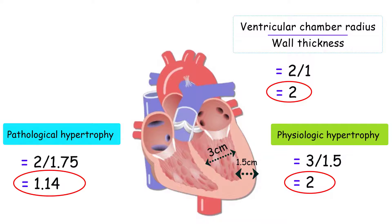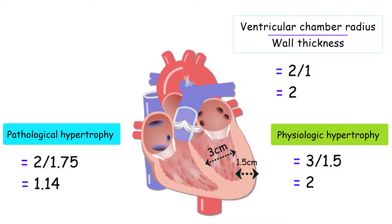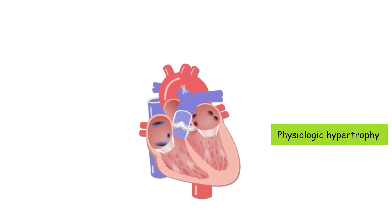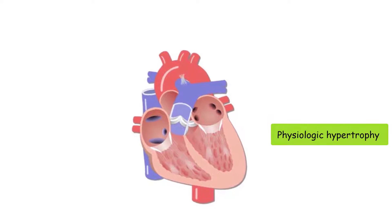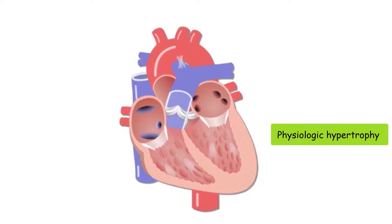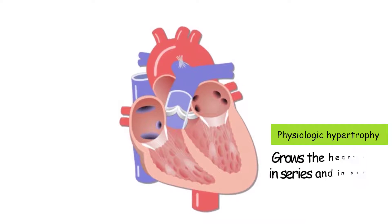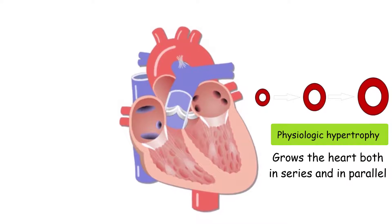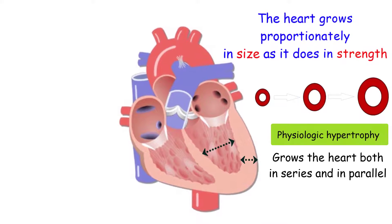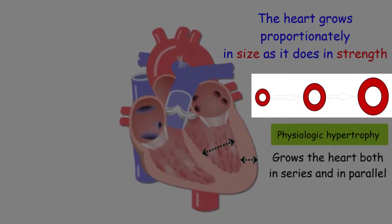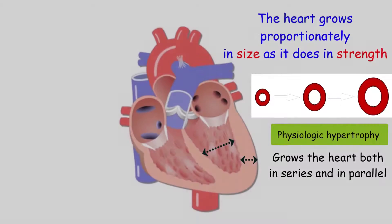One crucial way physiologic hypertrophy differs from pathologic hypertrophy is that physiologic hypertrophy maintains the chamber radius to wall thickness ratio. As the chamber that holds the blood grows larger, the heart is able to take in more blood. Since physiologic hypertrophy grows the heart both in series and in parallel, the heart grows larger to accommodate more blood while proportionately growing stronger to push out the blood. This allows for a match between the amount of blood the heart can hold and the strength the heart has to eject blood.